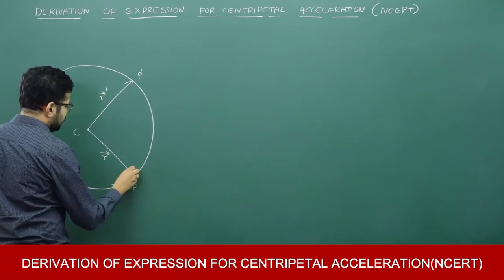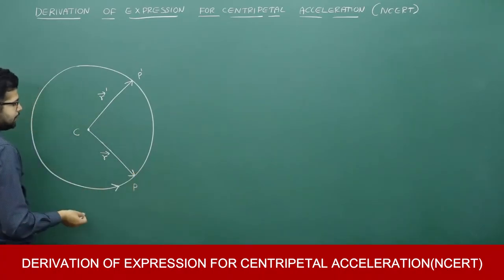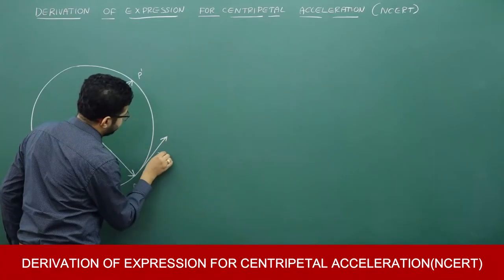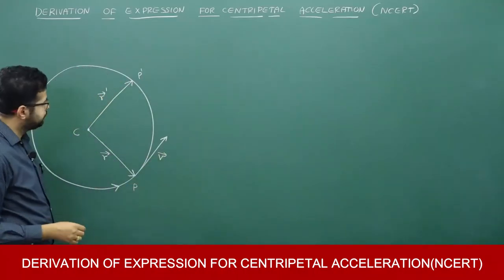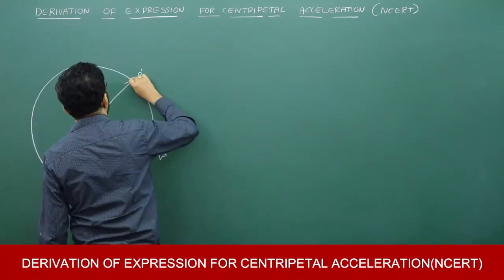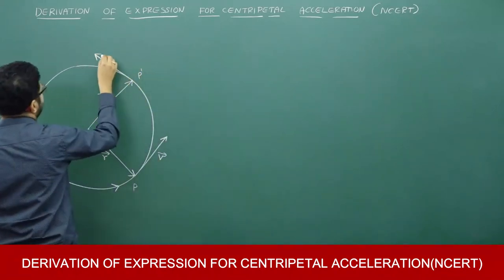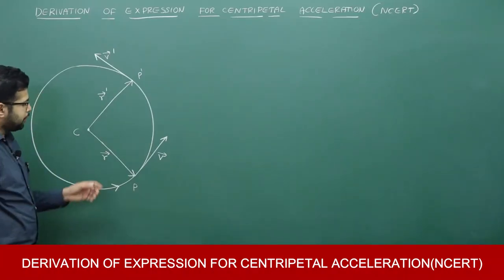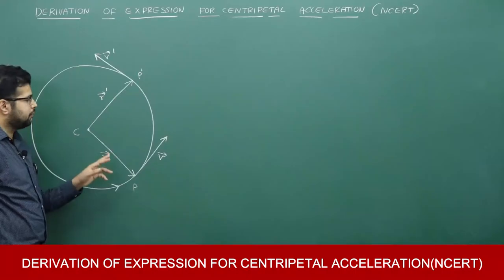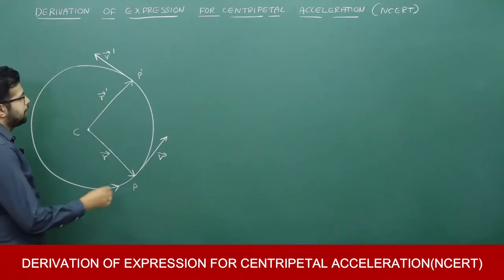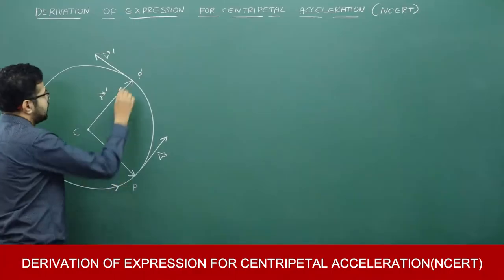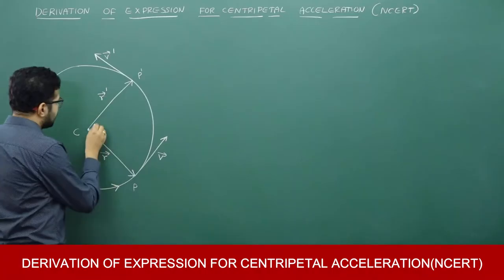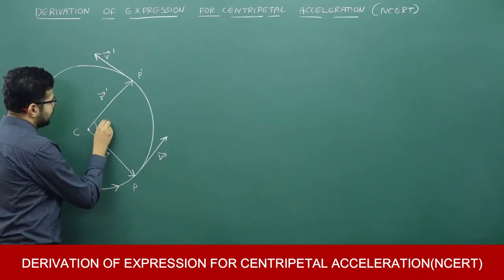When the particle is at point P, the velocity is v. When the particle is at point P', the velocity is v'. When the particle is at P, position vector is r and corresponding velocity is v. When the particle is at P', the position vector is r' and the corresponding velocity is v'. The angular displacement let it be delta theta.